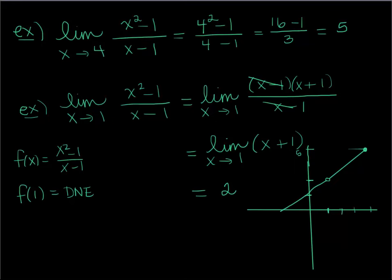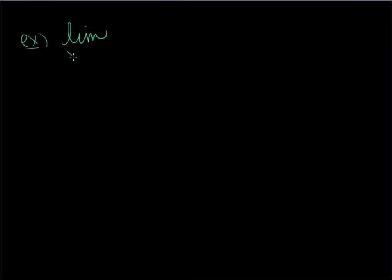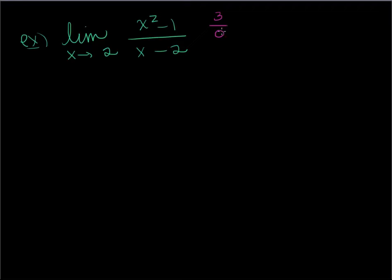Let me do one more quick example. What about the limit as x approaches 2 of (x² − 1) / (x − 2)? Notice if I put in 2, on the top I get 4 − 1 = 3. On the bottom I get 0. In mathematics, that is an undefined statement. What we're going to see later is this is basically equivalent to infinity, and infinity is not a number. There's no way to factor that out — I don't get 0/0; I get 3/0, which is definitely undefined. So you could say does not exist, or undefined, because that factor will not cancel out.